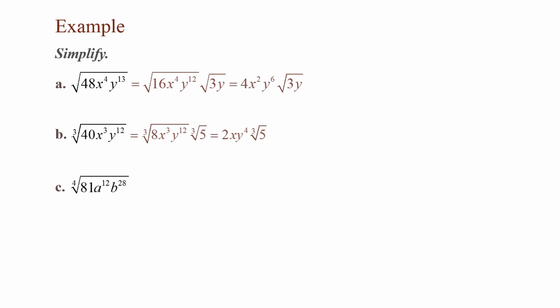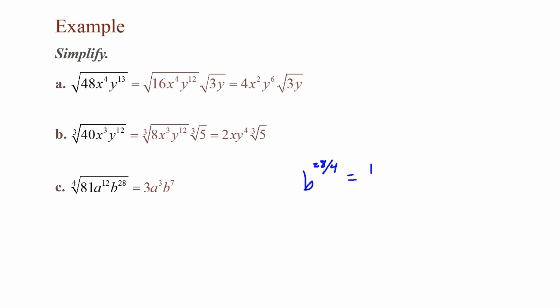For Part C, we have the 4th root of 81a to the 12th b to the 28th. The 4th root of 81 is 3. For a to the 12th: 12 divided by 4 is 3, which gives a to the 3rd. For b to the 28th: 28 divided by 4 is 7, so that gives b to the 7th. Final answer: 3a to the 3rd b to the 7th.